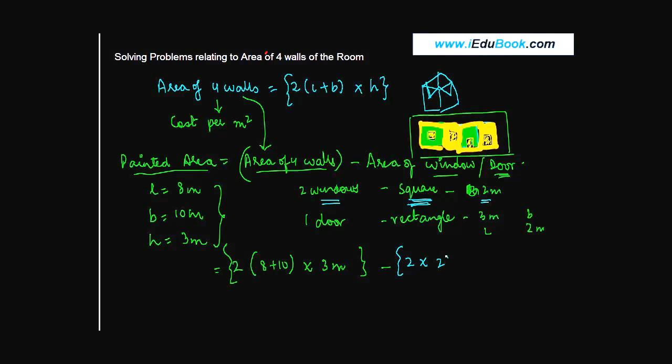Minus the area of the rectangle. The area of the rectangle is length into breadth, so 3 meters into 2 meters. Because there is only one door which is rectangular, we don't multiply it by anything else.